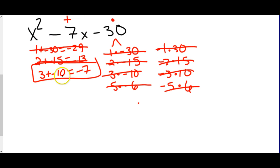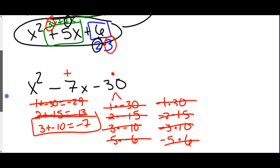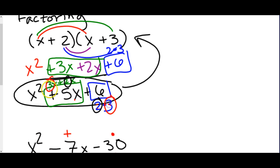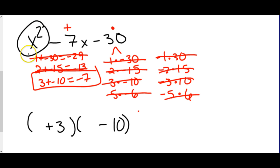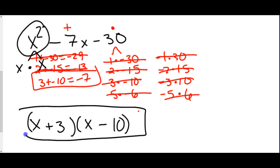We found these two numbers: 3 and negative 10. In the original problem, the 2 and 3 we found were the last number in each parenthesis — that's what's going to happen with our factoring. We put those two numbers in the end of each parenthesis: positive 3 and negative 10. And x² breaks down into x times x, just like we broke 30 down into multiplication, so each parenthesis starts with x. So there is our second type of factoring.